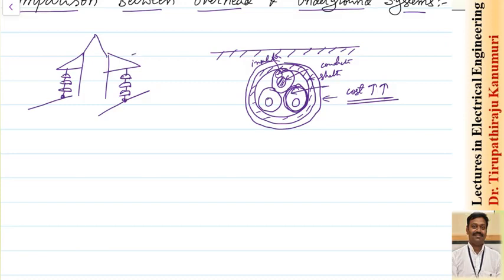In the case of overhead transmission lines, the advantage is that conductors will be hanging from the tower — the cost will be the cost of the tower and the cost of the insulation. Practically it is observed that the cost of the overhead transmission line including all costs will be only 50% of the underground system.